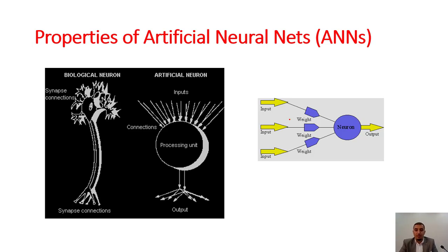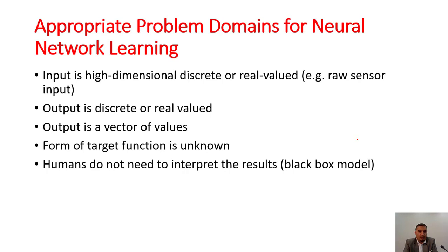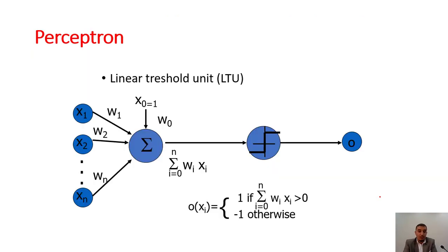The neural network is built on the same idea. We have inputs multiplied by weights, sent to the neuron, and the neuron sends them out to the outputs - many simple neuron-like switching units, many weighted interconnections among units, and highly parallel distributed processing. Appropriate problem domains: input is high dimensional discrete or real values, output is discrete or real values, form of target function is unknown. Humans do not need to interpret the results, which is the black box model.